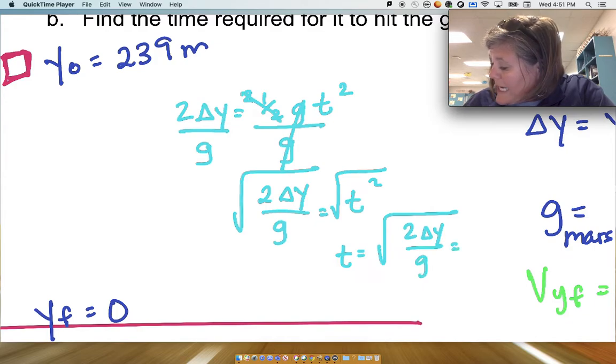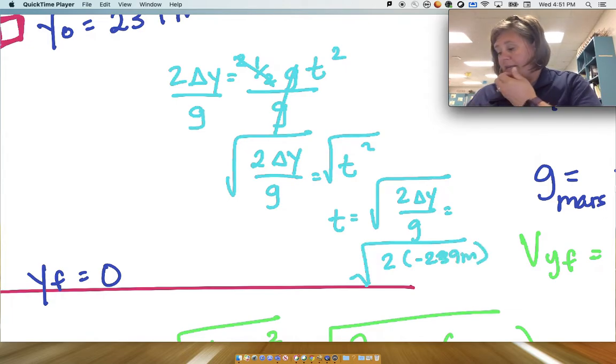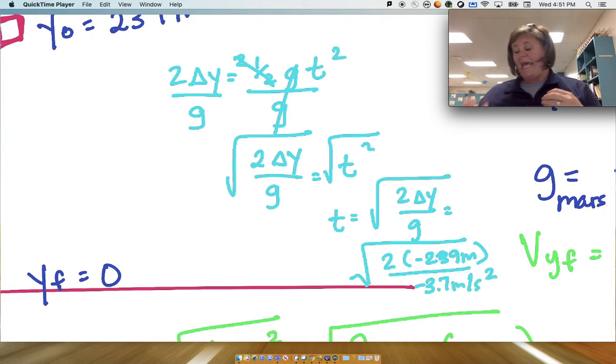So I'm going to take 2, the square root obviously, times -239 meters divided by -3.7 meters per second squared, and that'll give me my time.